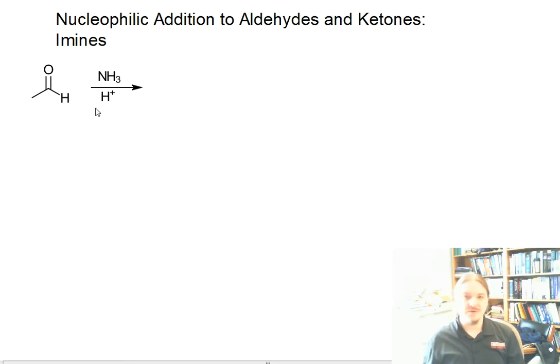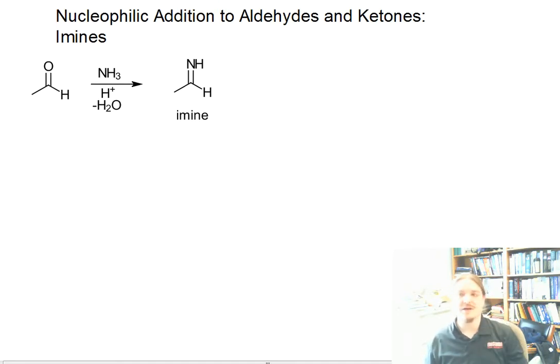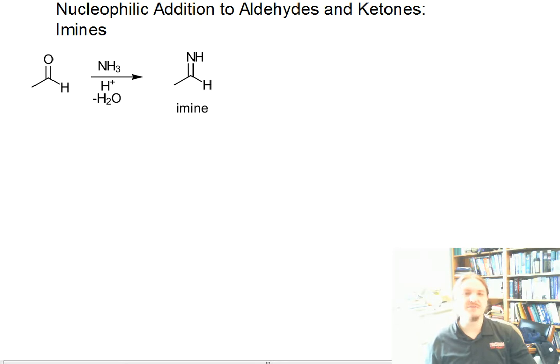This reaction requires acid, and like the formation of acetals with alcohol nucleophiles, it requires the removing of water. And the product looks like this. This carbon-nitrogen double bond functional group is an imine. And in another video, in the next video, I'm going to talk about the different types of imines that can form. And I'm also going to talk about hydrolysis of imines coming up in another video. This is the formation of imines.